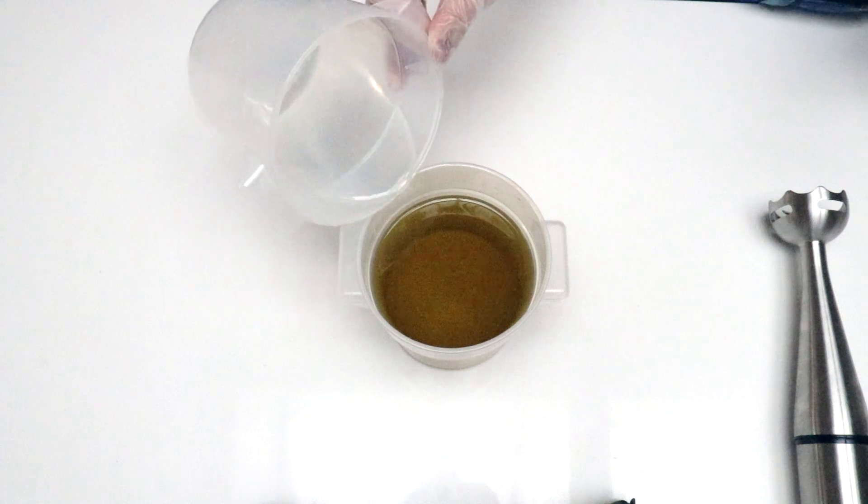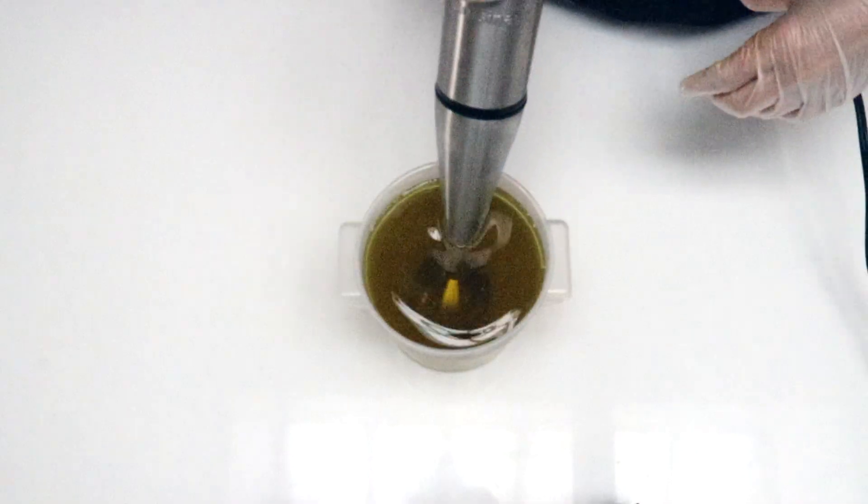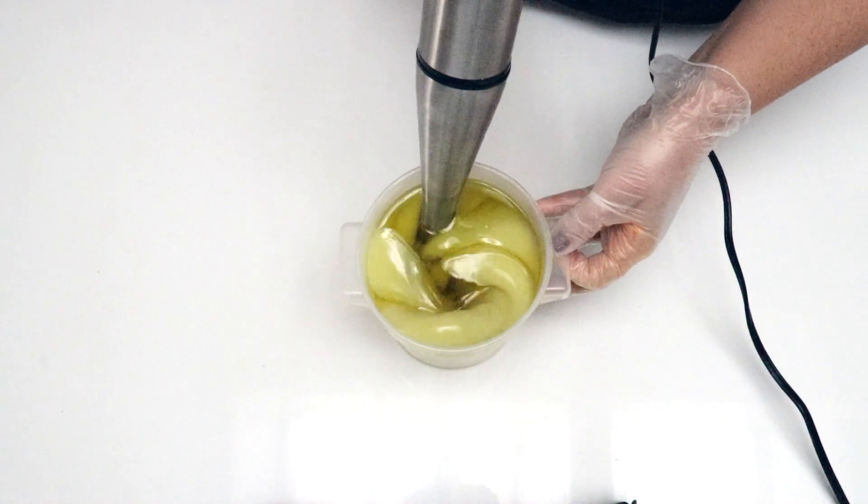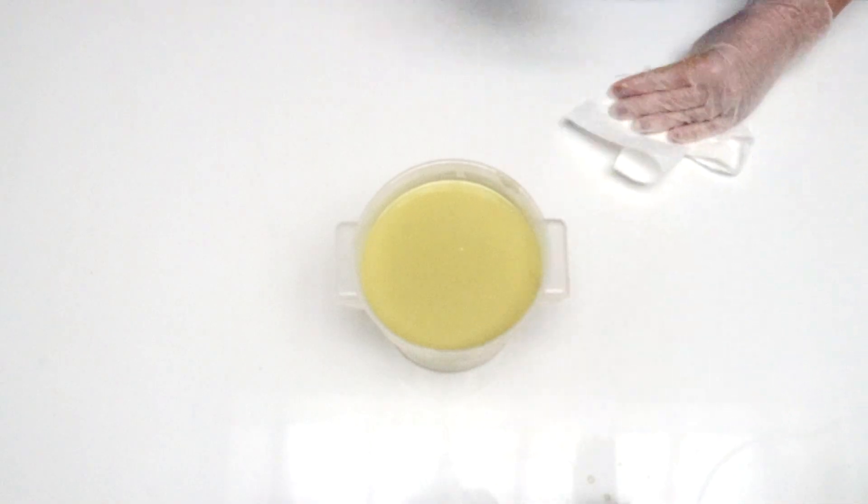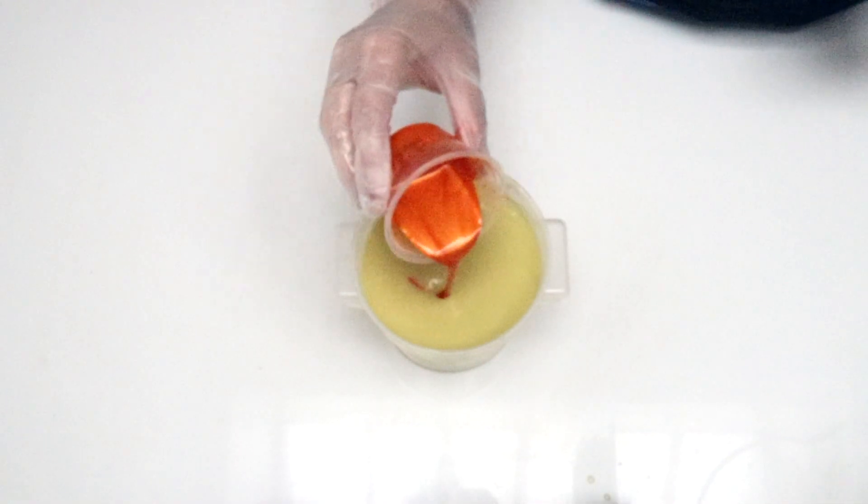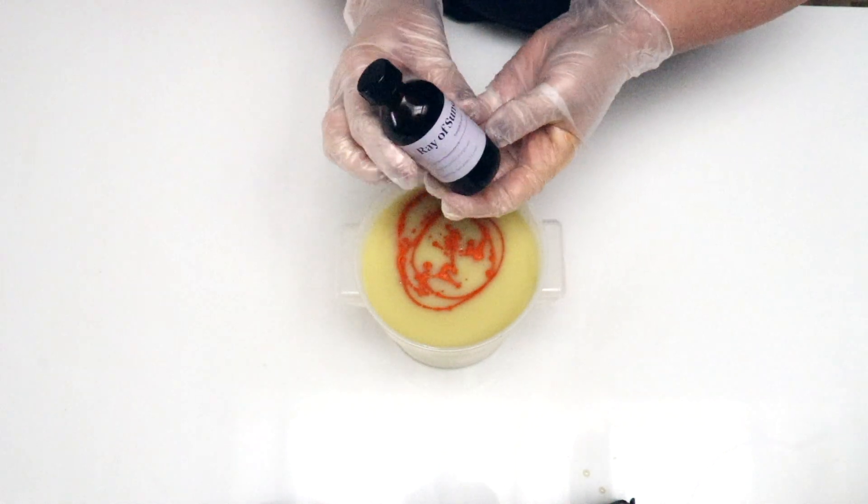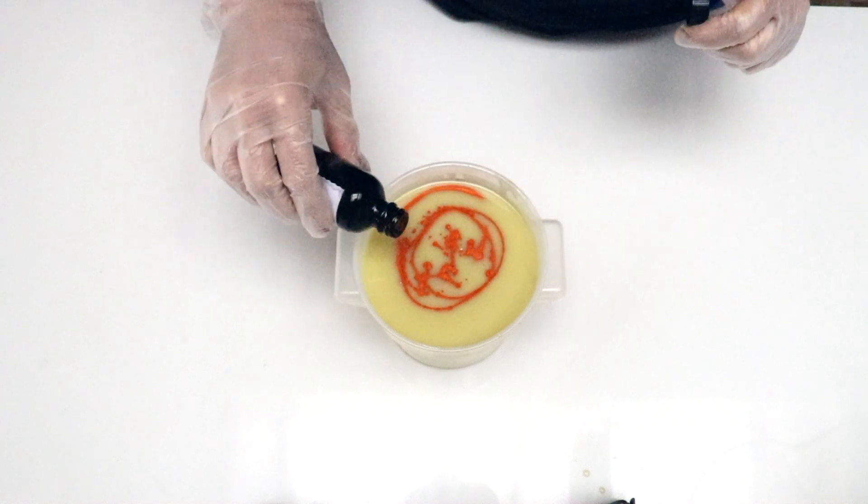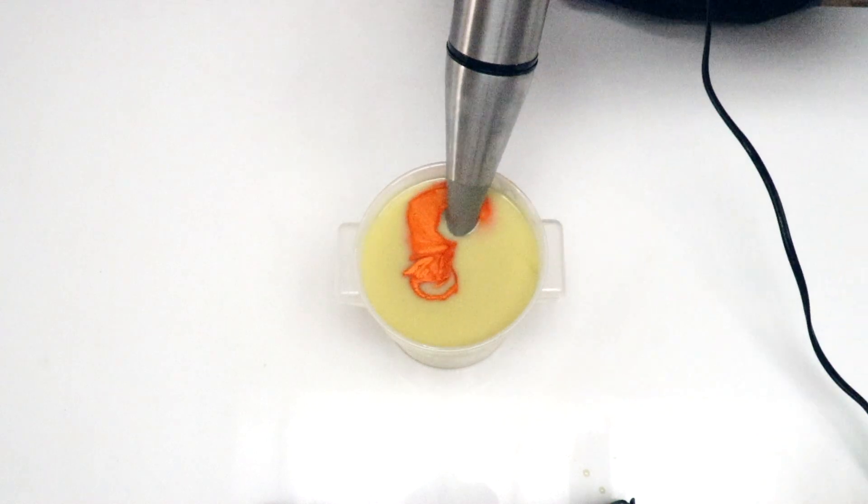I'll slowly and carefully add my cool lye water to my oils and blend it to a light trace. After that I'll add the color and the fragrance, 1.6 ounces, and then I blend that up some more.